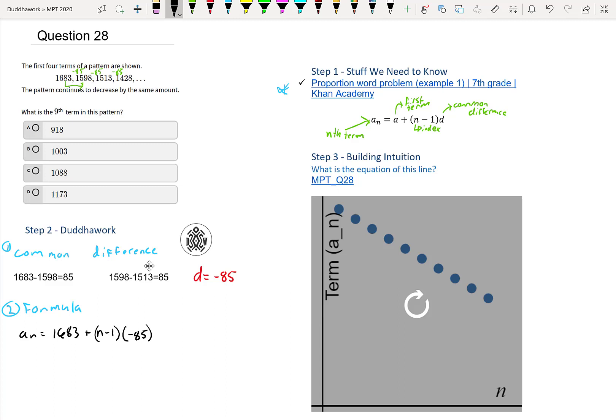And if we want, we could even simplify that. But we don't need to. Then we could do just A9, which is equal to 1683, plus 9 minus 1, times negative 85. So this I'll do in the calculator. So that's 1683. And it's plus 8, because that's 9 minus 1. And then minus 85. So I'll just write minus 8 times 85. But then in calculator, it's 1003. And that's answer number B. So we're done.